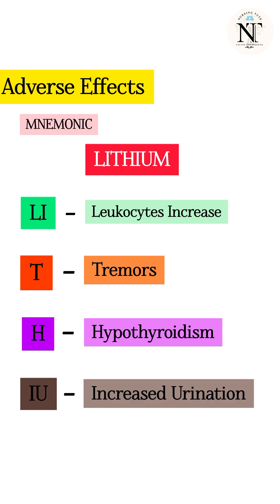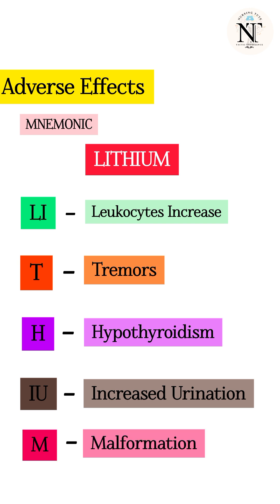IU stands for increased urination. Lithium may cause drug-induced nephrogenic diabetes insipidus, so patients will complain about increased urination. And M stands for malformation, like Ebstein anomaly in the fetus. So during pregnancy, lithium should be avoided.